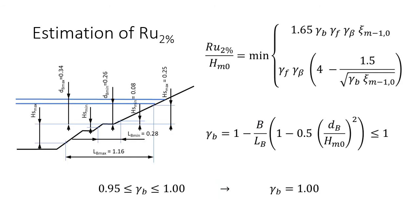The run-up characteristic value that is considered in this presentation is Ru2%, or the run-up value that is exceeded by only 2% of the incident sea waves. The measured dimensionless run-up values were compared to the ones produced by the empirical formulae of the overtopping manual.